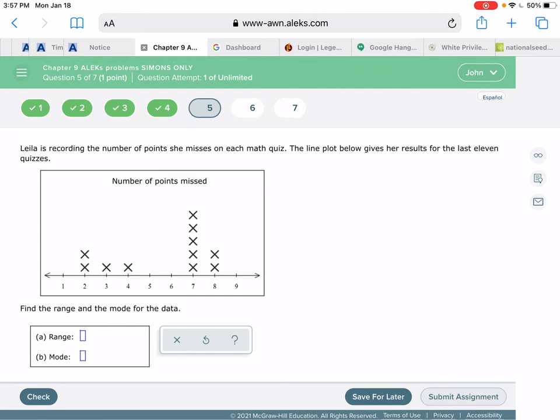So it looks like two times she missed two points, one time she missed three, one time she missed four, five different times she missed seven points, and then two times she missed eight points.